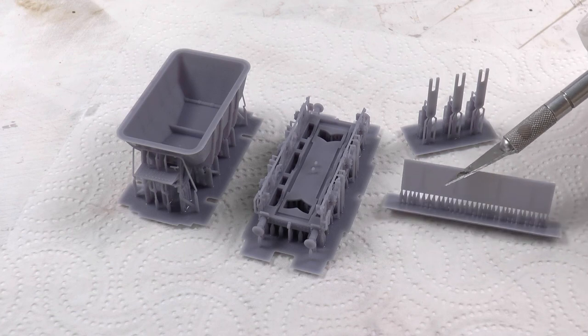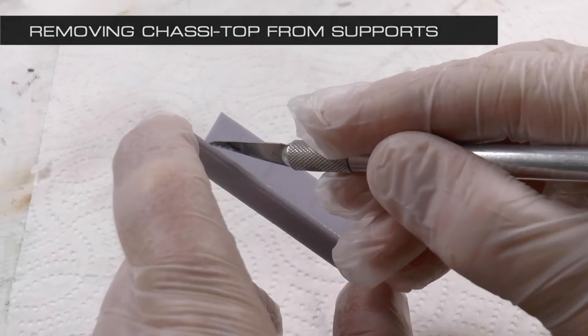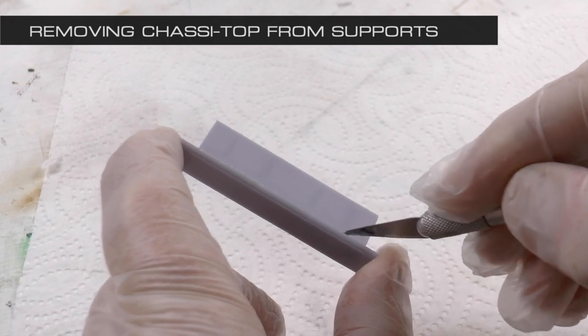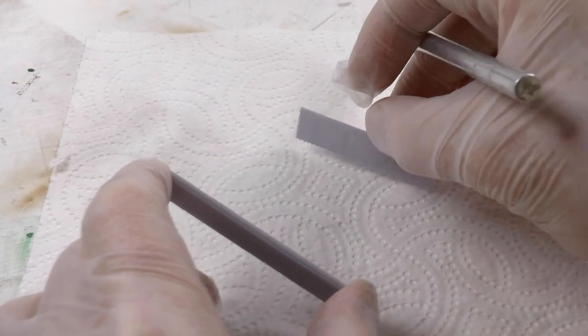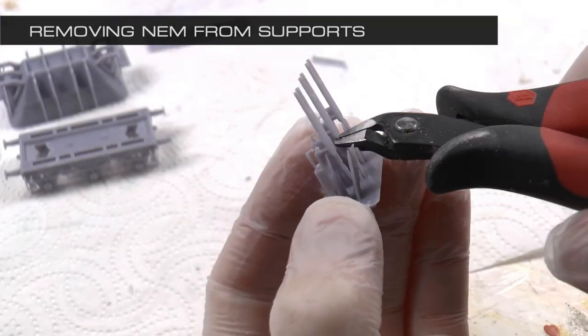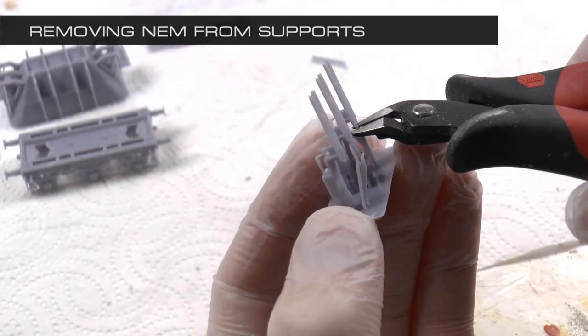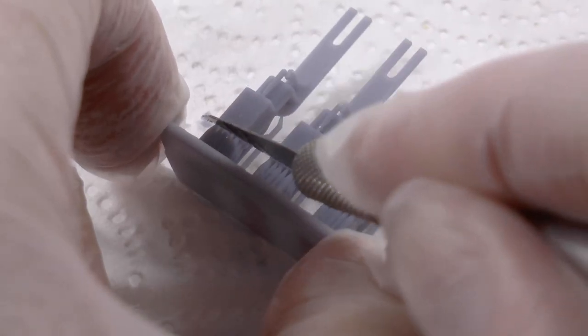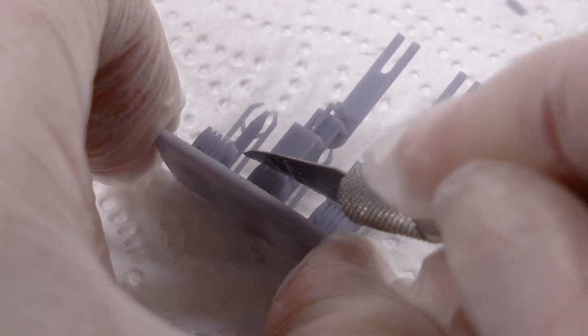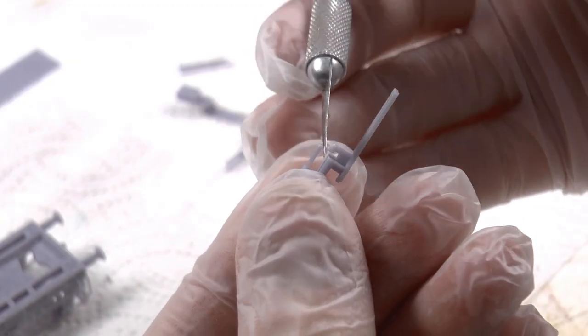So let's now remove them from the supports. The chassis top, I'm just using my scalpel to cut away that, and then I break it away. Then the neem mechanism needs some cutting with a side cutter, and then once I've cut the pieces off, I just remove the rest with my scalpel like that.